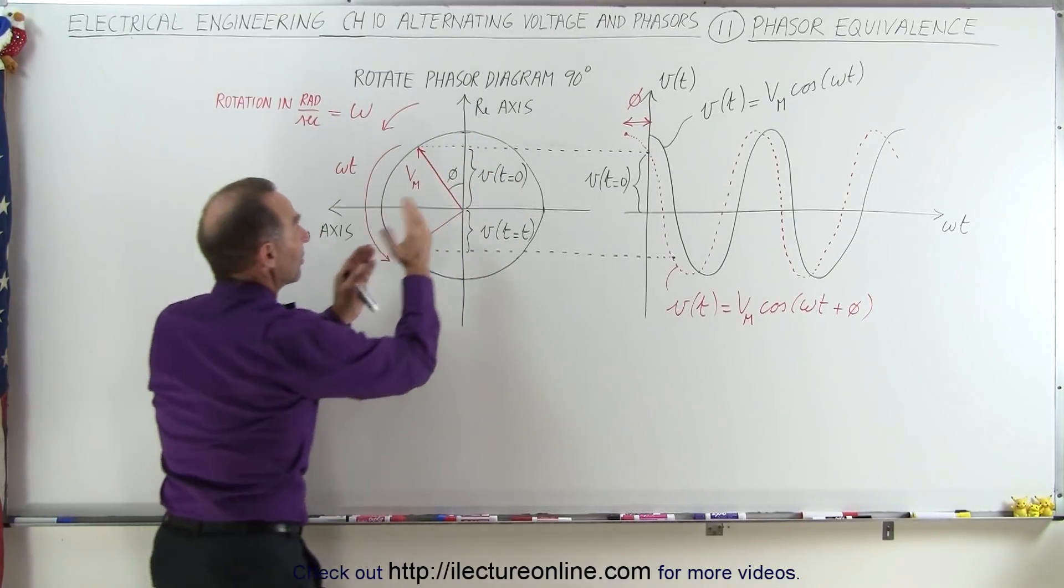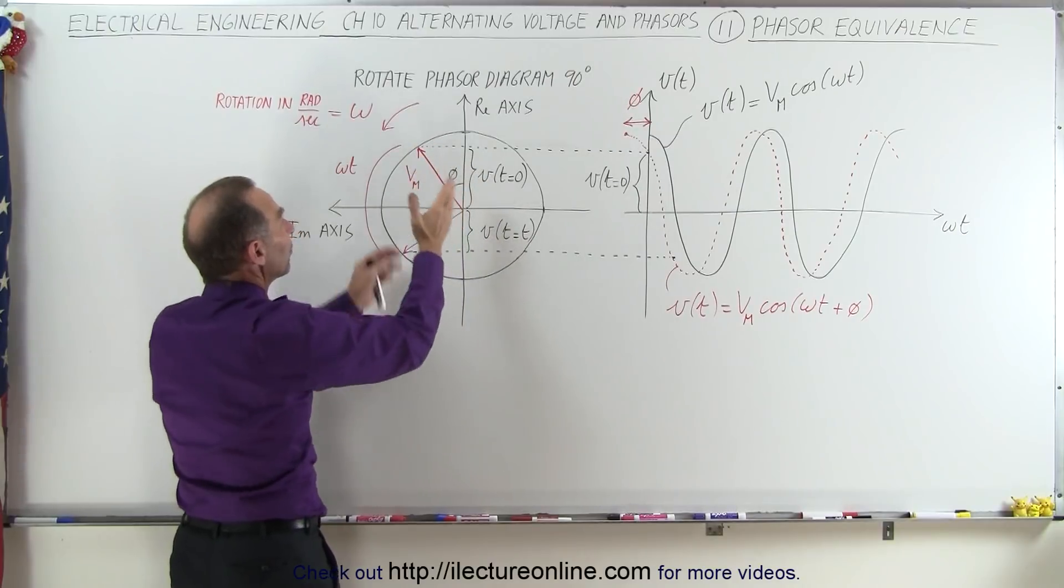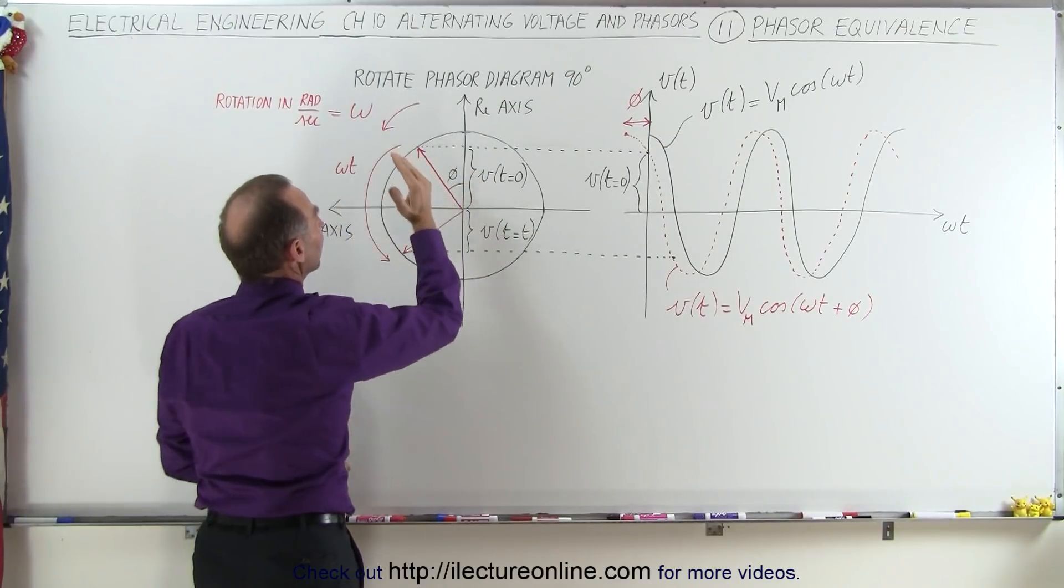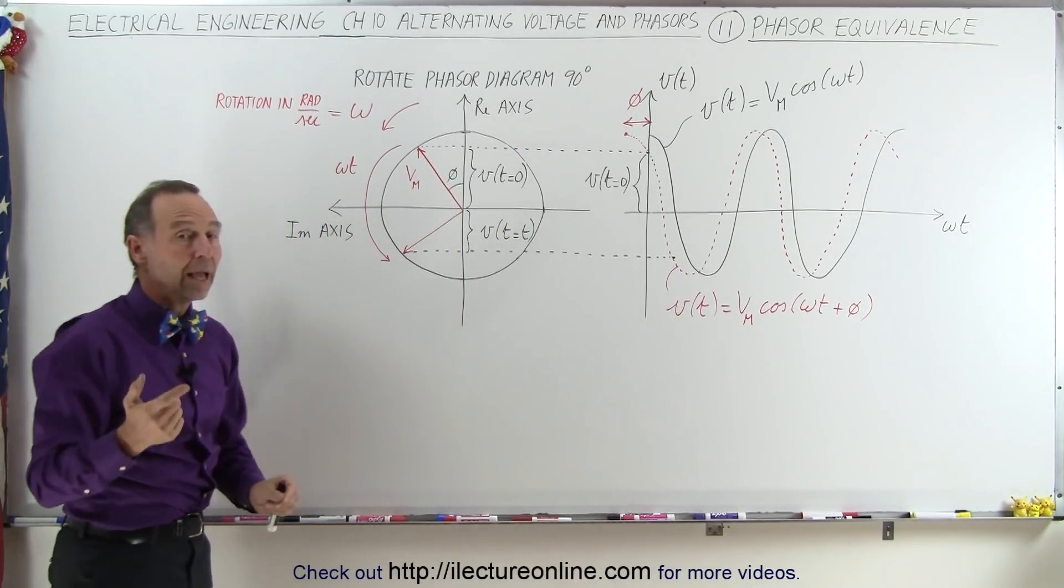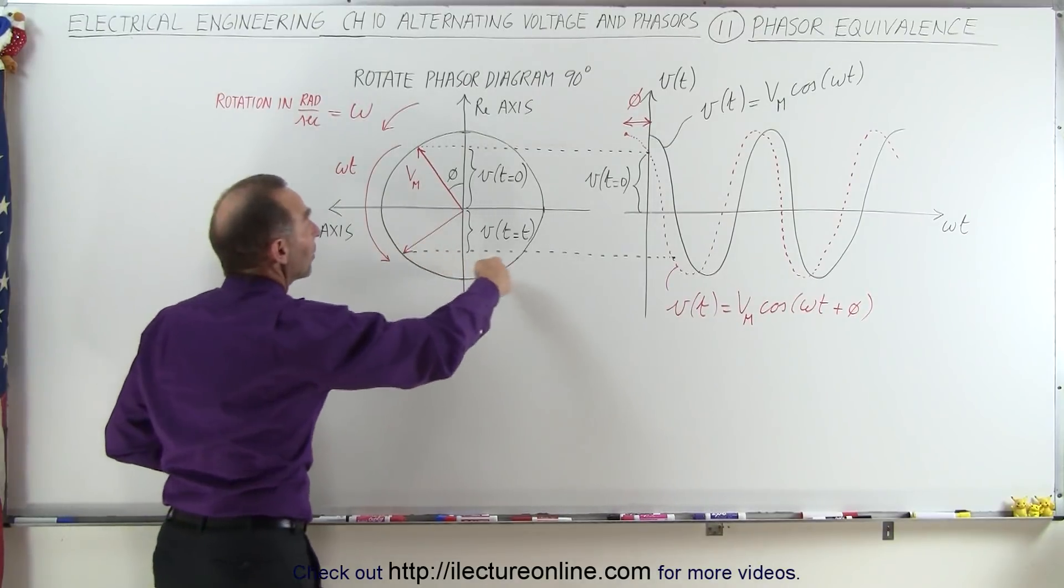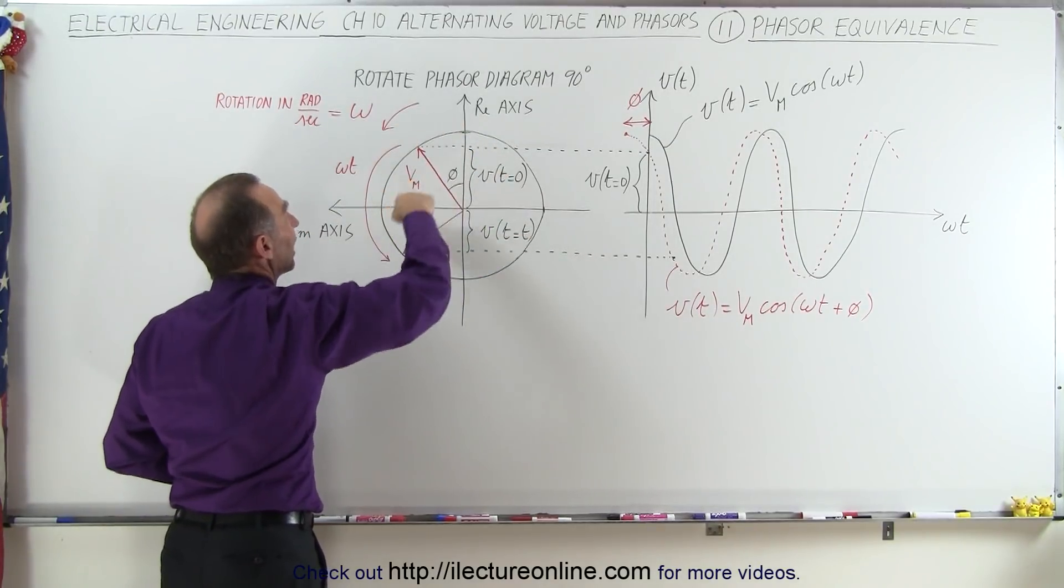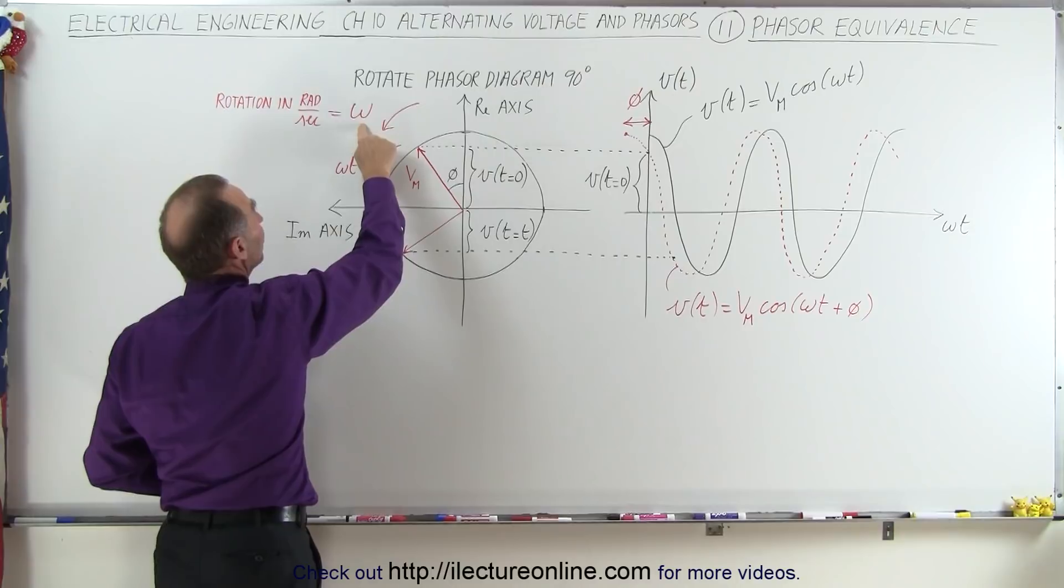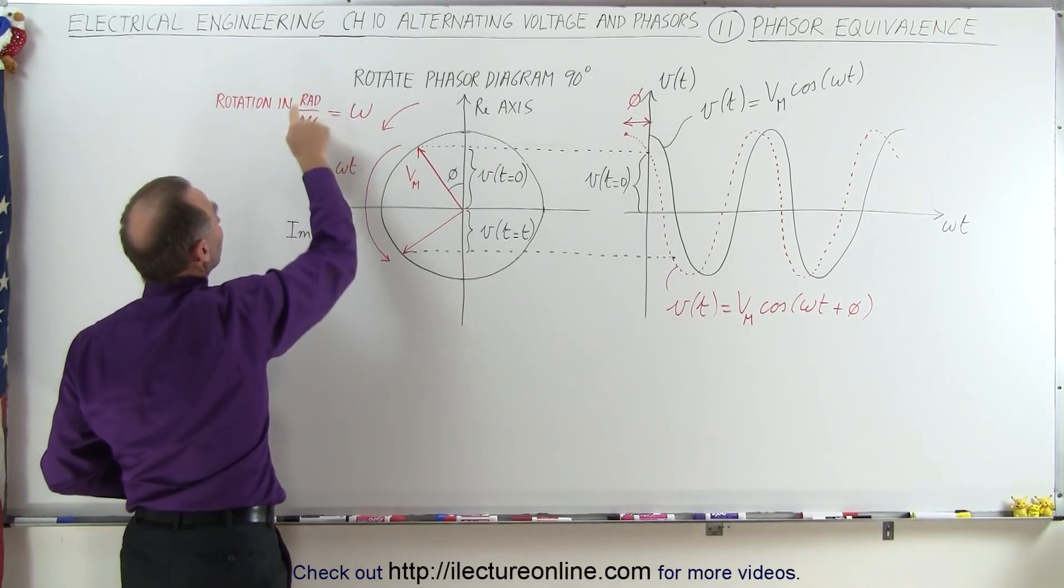So the phasor right here gives you a snapshot of t equals zero, that's where the phasor is at. Now the phasor diagram does represent the rotation of the phasor as time moves on.